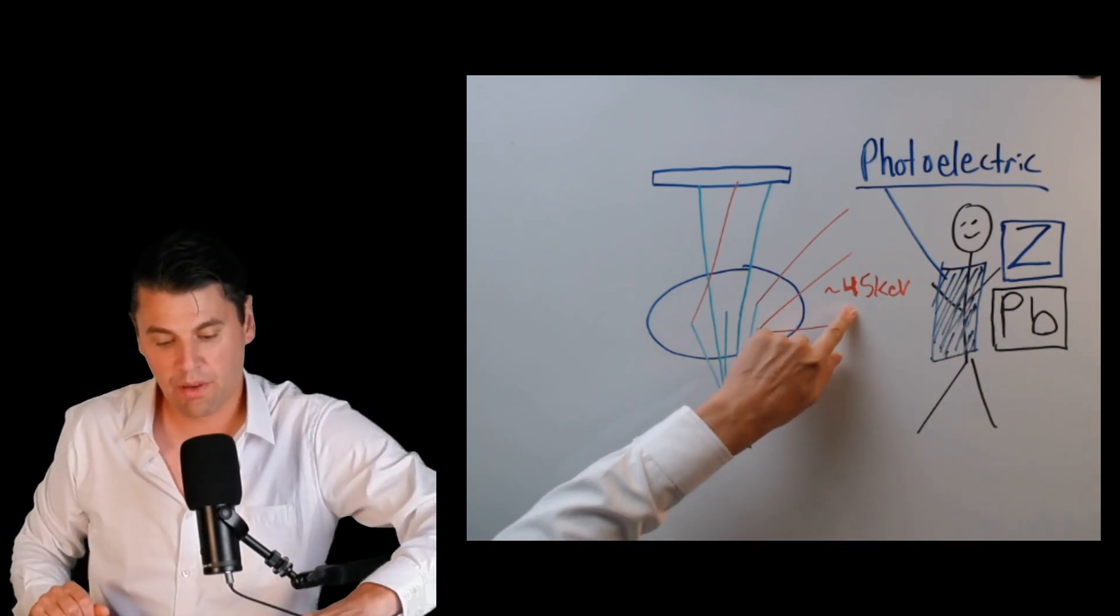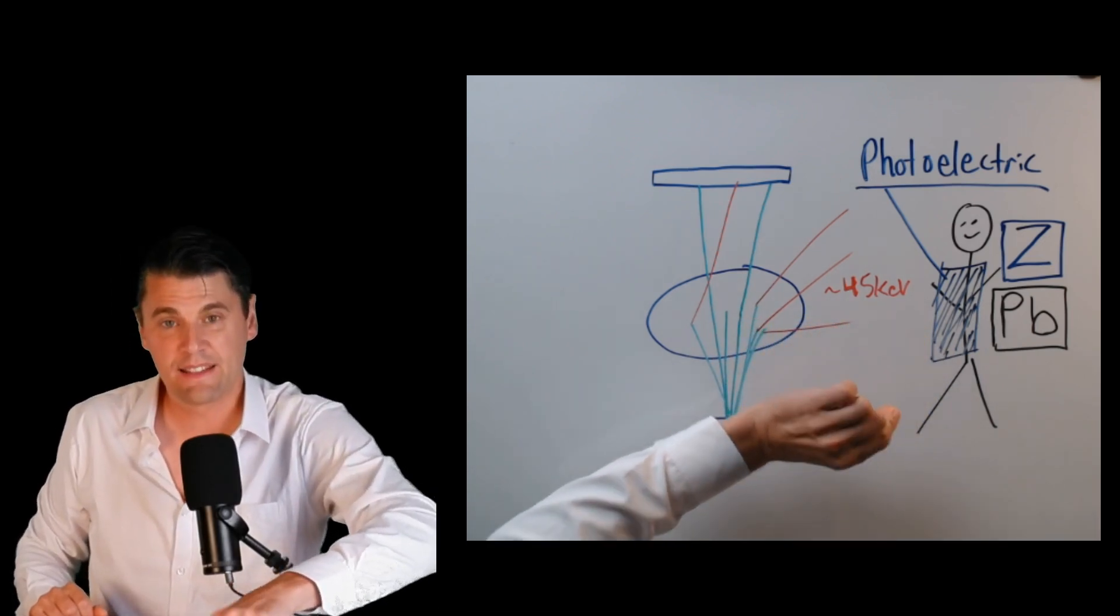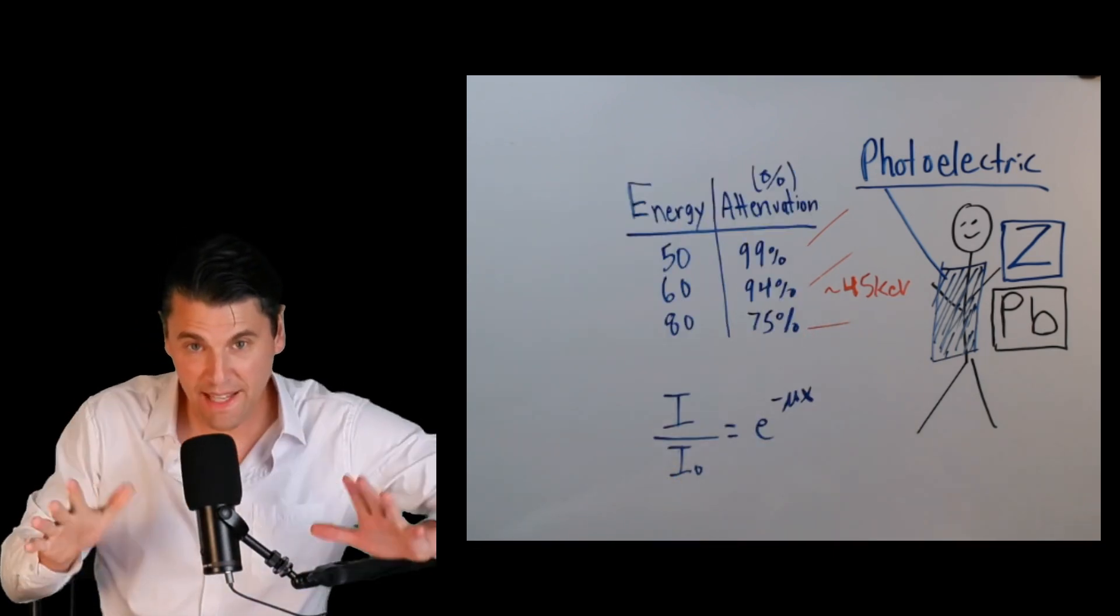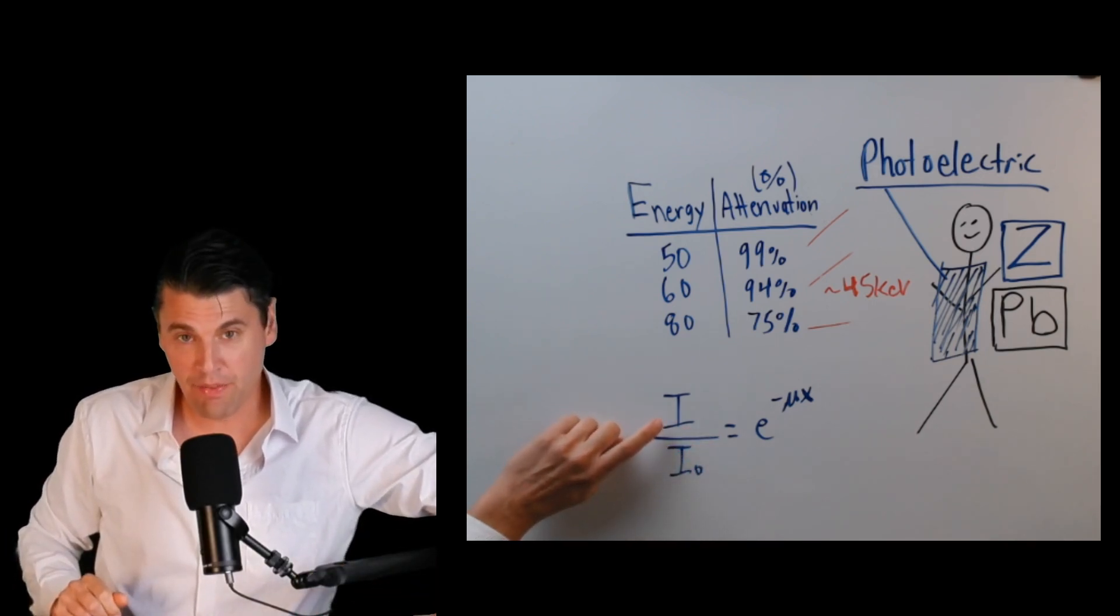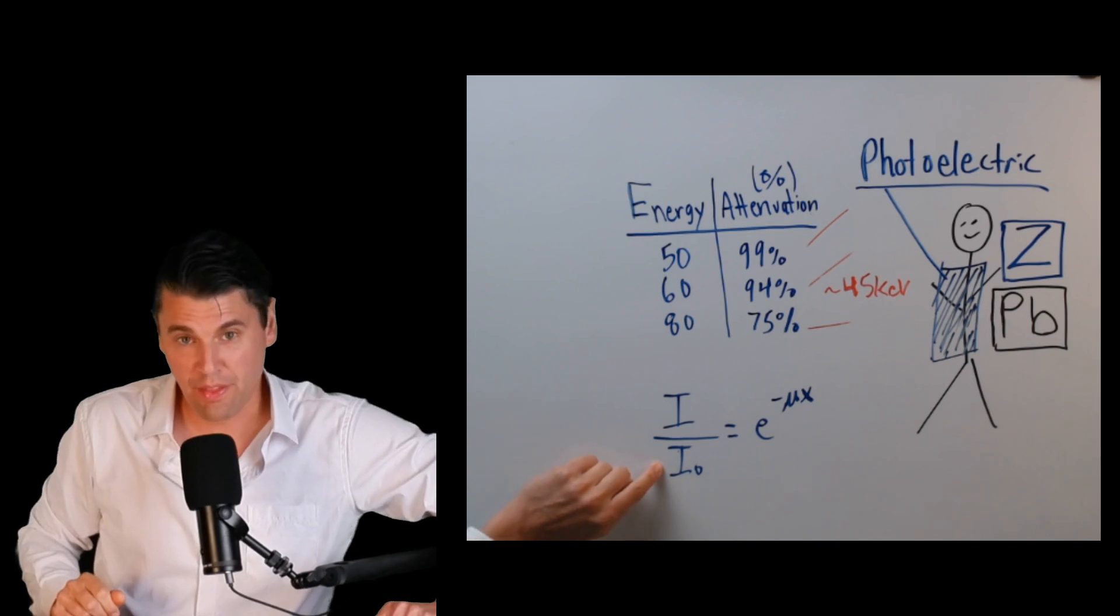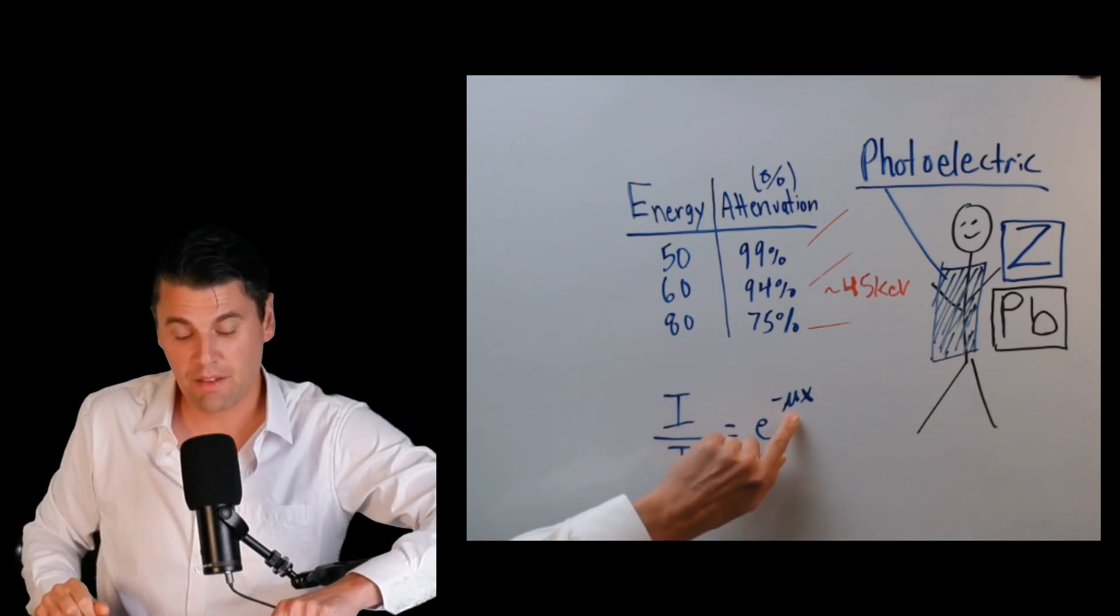We have x-ray photons that are in the mid 40s of the KEV on average, and we would like to stop them with a very high likelihood. We can use something called Beer's Law to actually calculate the amount of x-rays or the intensity of x-rays that are coming through compared with the x-rays which were initially incident on our shield. It's e to the minus mu x, where mu is what we call the linear attenuation coefficient.